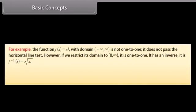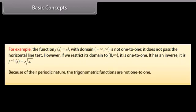For example, the function f(x) = x² with domain (−∞, ∞) is not one-to-one — it does not pass the horizontal line test. However, if we restrict its domain to [0, ∞), it is one-to-one and has an inverse: f⁻¹(x) = √x. Because of their periodic nature, the trigonometric functions are not one-to-one.